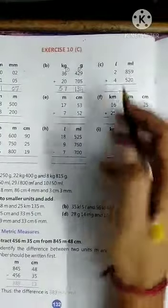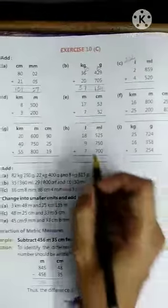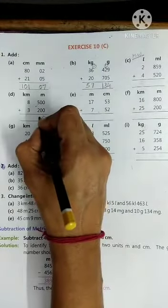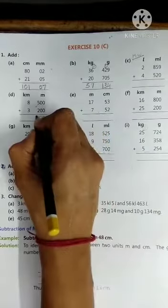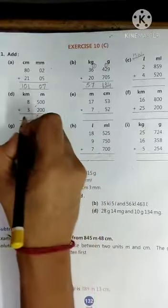Now C part, you have to do yourself, homework. Now D part. 0 plus 0 is 0, 0 plus 0 is 0, 5 plus 2 is 7. 8 plus 3 is 11.